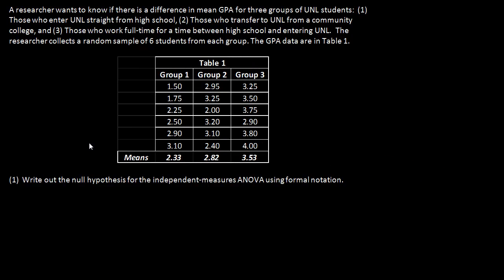Okay, this is the example problem for ANOVA. A researcher wants to know if there is a difference in mean GPA for three groups of UNL students: Group 1, Group 2, and Group 3.